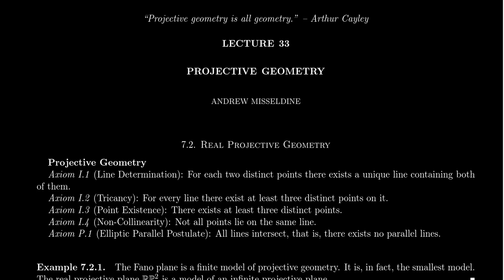We are going to talk today about projective geometry. Before we get into that, I want to give you some idea of why we're talking about it. In the last couple of lectures, we've been talking about Euclidean geometry and hyperbolic geometry, which are the two options one gets with a neutral geometry, where we stay neutral about our parallel postulate. We then made decisions about what happens if we assume the Euclidean or hyperbolic parallel postulate, and there's a lot of similarity between these two because they're both neutral geometries.